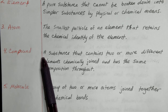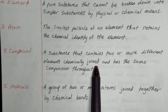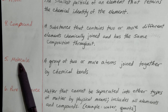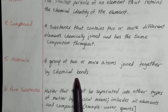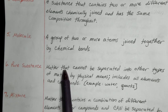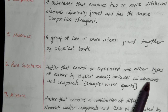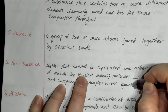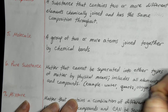Compound: a substance that contains two or more different elements, chemically joined, and has the same composition throughout. A molecule is a group of two or more atoms joined together by chemical bonds. Pure substance is matter that cannot be separated into other types of matter by physical means — this includes all elements and compounds. Examples: water and quartz are compounds, and oxygen is an example of an element.